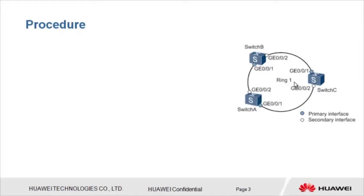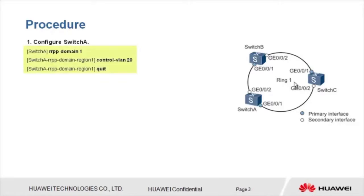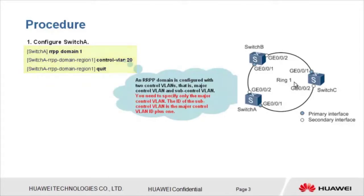Now let's move on to the configuration procedure. First, we need to configure Switch A: create RRPP domain 1 and control VLAN 20. Note that an RRPP domain is configured with two control VLANs — a major control VLAN and a sub control VLAN. You need to specify only the major control VLAN. The ID of the sub control VLAN is the major control VLAN ID plus 1.